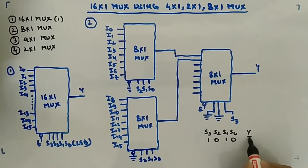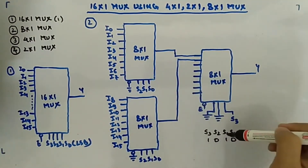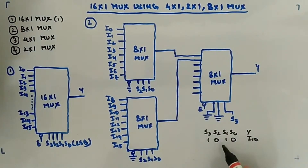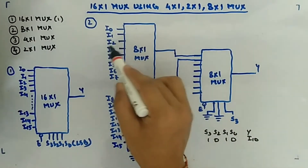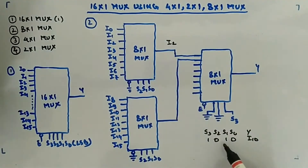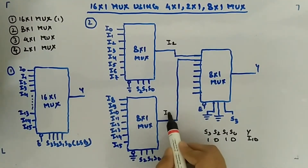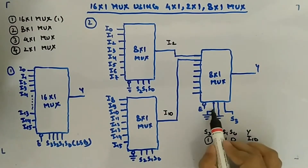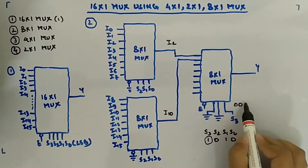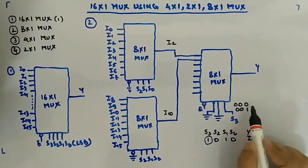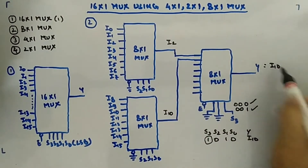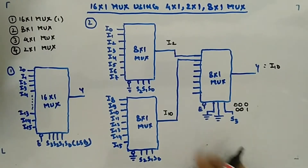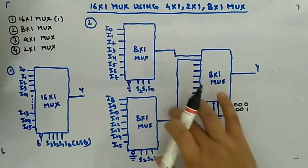As an example, take S3 S2 S1 S0 = 1010 - output Y should be I10. S2 S1 S0 = 010 selects I10 from the second 8:1 MUX in the first layer. Since S3 is 1, only two values are possible at the second level: 000 (selects I2) or 001 (selects I10). With S3 = 1, the output equals I10. This is how it works.